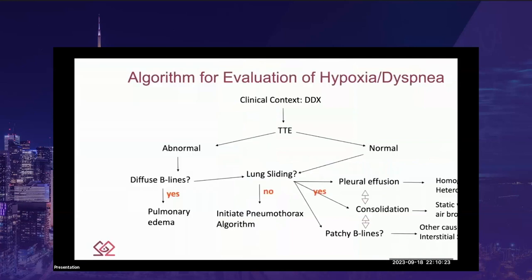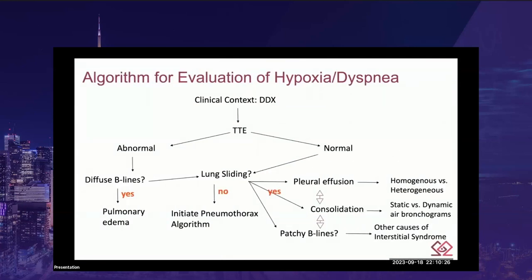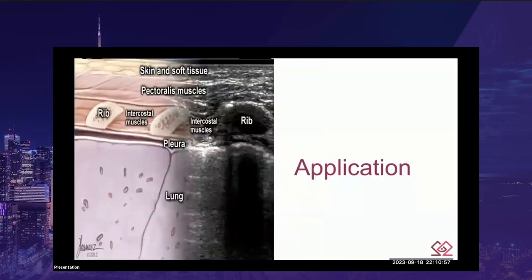The algorithm I use in the CVICU or CTICU: when patients present hypoxic and dyspneic, the first question is whether the echo is normal or not. If it is normal, I move to evaluate the lung — is there lung sliding? What are the characteristics of the B-lines? Are they patchy or homogenous? Is there a pleural effusion? Can I see consolidation with static and dynamic air bronchograms? Let's apply this to a number of cases.